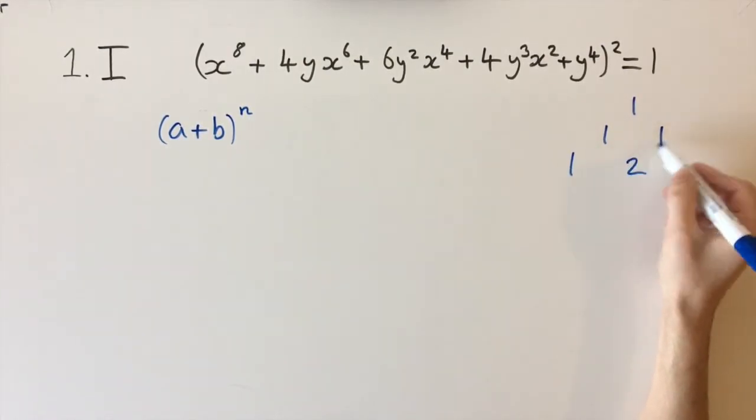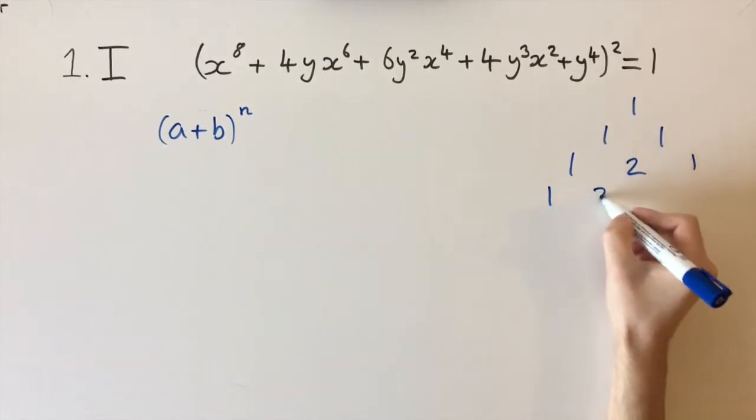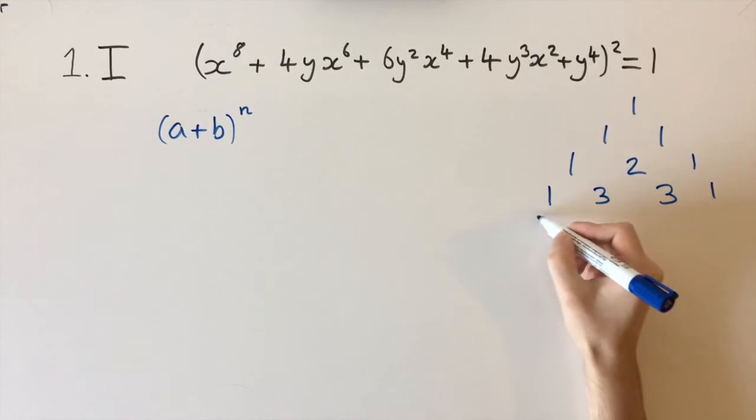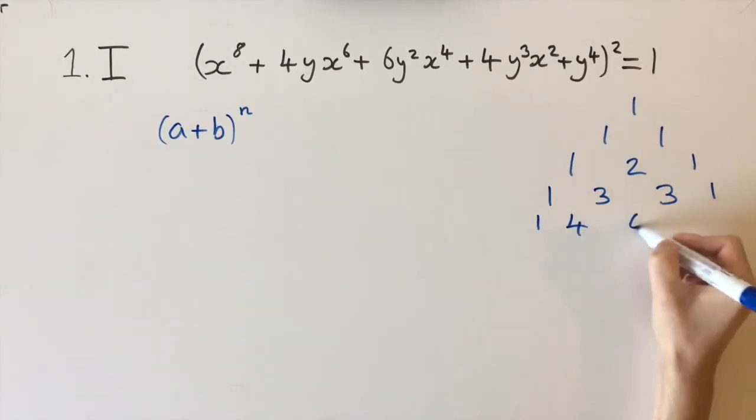We've just added the two numbers above it, and we have 1 on the right, and then again 1, 3, 3, 1, then 1, 4, 6, 4, 1, and it carries on like that.